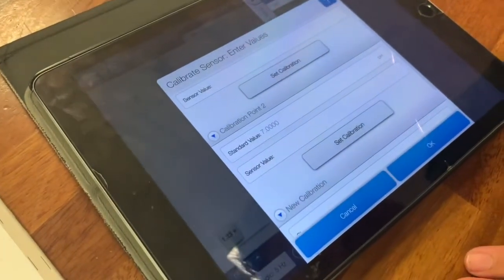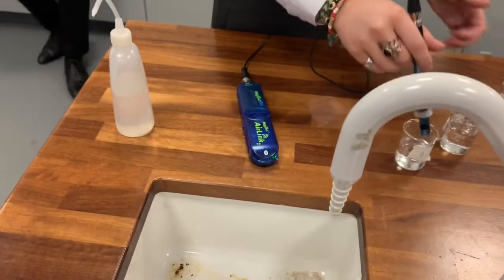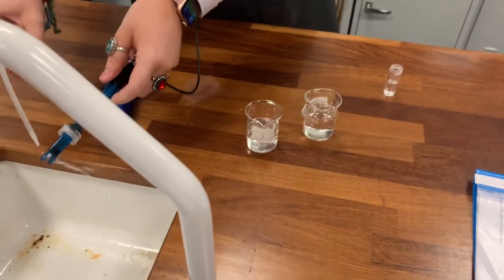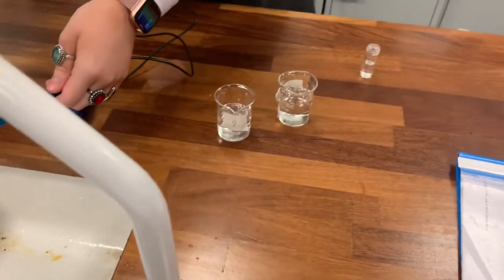And over here can you rinse out your buffer? So all the groups are doing this at the minute - they're rinsing out the buffer, rinsing out the probe, and then you're going to get to your pH 9.